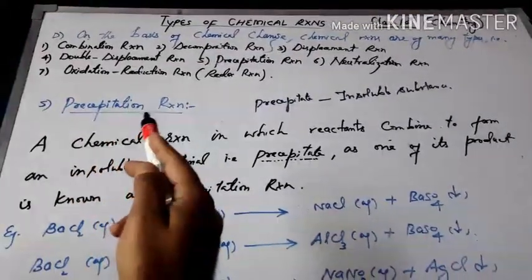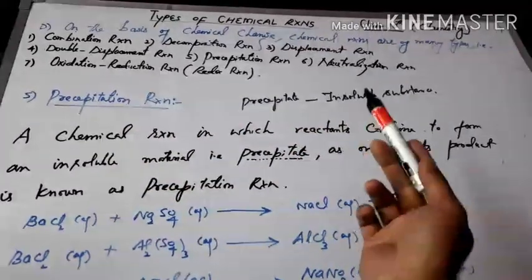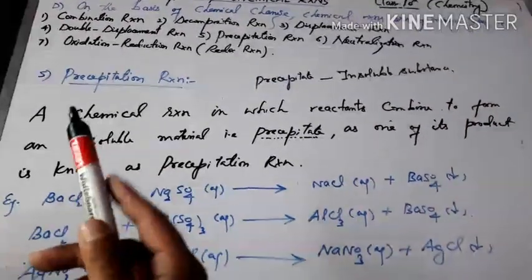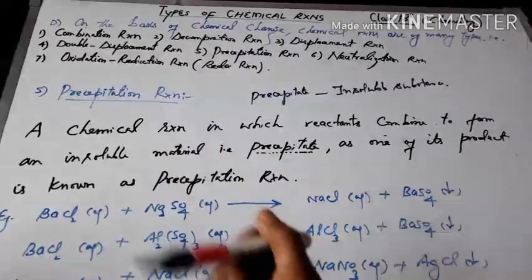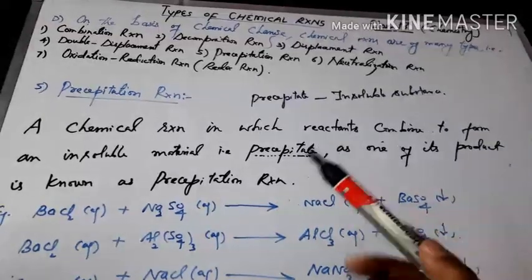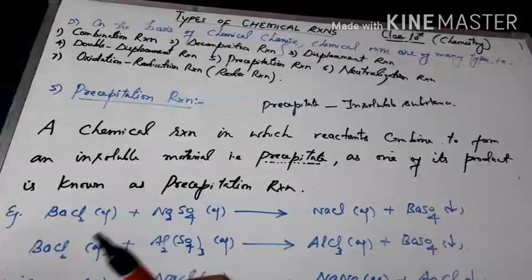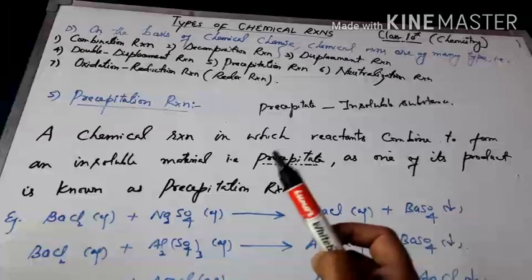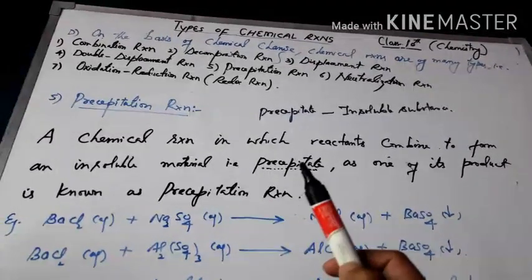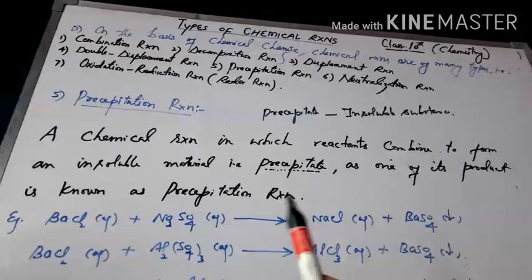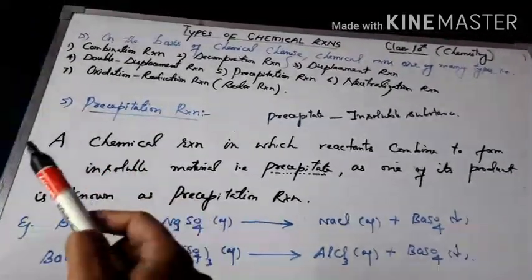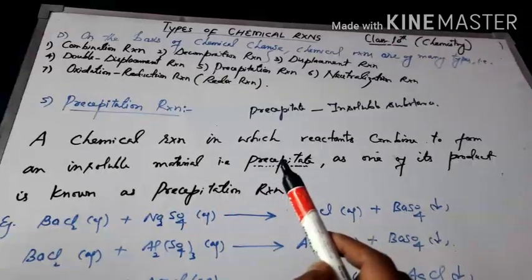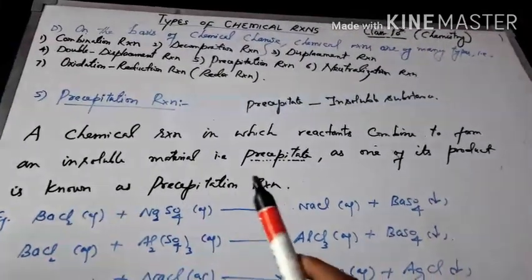The fifth type is precipitation reaction. Precipitate means insoluble substance — it is a substance which is not soluble. So precipitation reaction is defined as: a chemical reaction when reactants combine to form an insoluble material or precipitate as one of its products is known as a precipitation reaction.